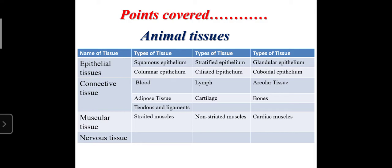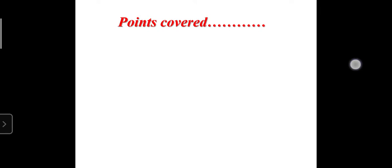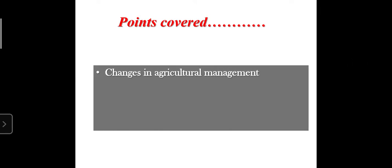First was animal tissue. There are four types of animal tissue: epithelial tissue, connective tissue, muscular tissue, and nervous tissue. You have to remember the subtypes also. Next we have seen the plant tissues. There are two types: meristematic tissue and permanent tissue, each with subtypes.